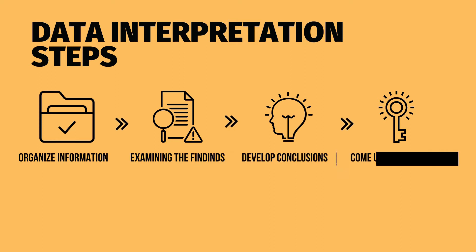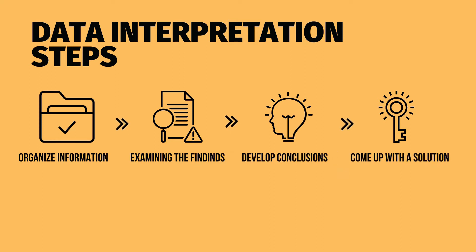Data interpretation is conducted in four steps. First is organizing or assembling the information you need, like bar graphs and pie charts. Next is to develop findings or isolate the most relevant inputs. Then, develop conclusions — like 'our approach is not working' or 'this turned out to be a better strategy.' And the last step is to come up with recommendations or actionable solutions.